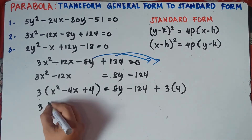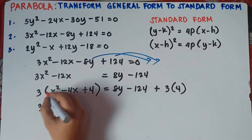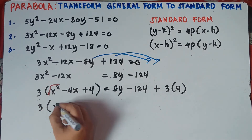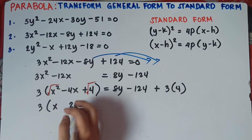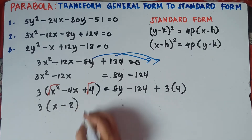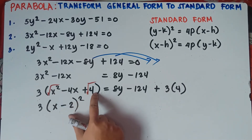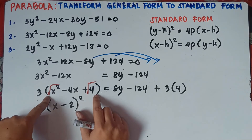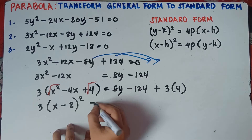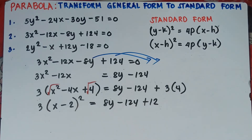Now convert the perfect square trinomial inside the parenthesis into a square of binomial. Take the square root of the first term: √(x²) = x. Take the square root of the last term: √4 = 2. Copy the sign of the middle term, which is negative. So you get (x - 2)², then close the parenthesis. So the left side becomes 3(x - 2)². On the right side, we have 8y - 124, and we add 3 × 4 = +12.